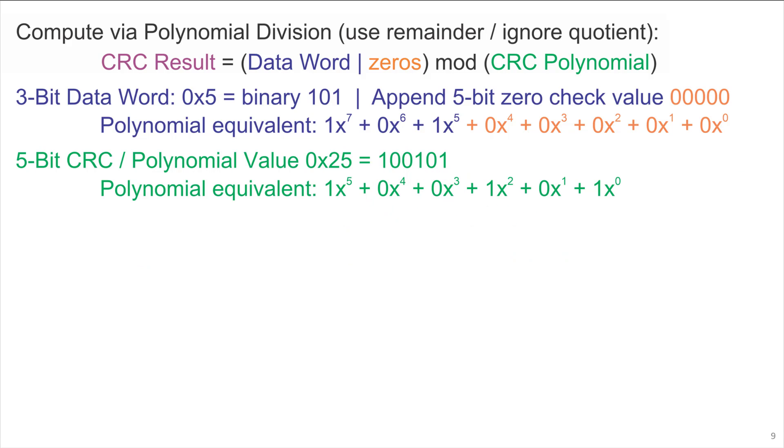To compute the CRC's check value, we compute x^7 + x^5 mod x^5 + x^2 + 1.